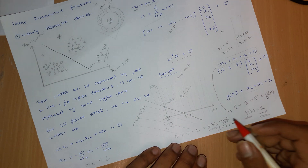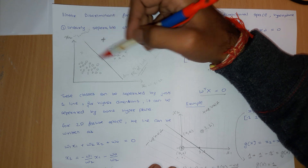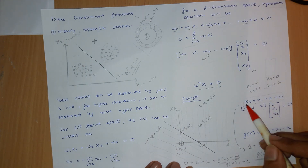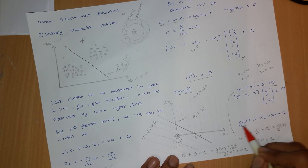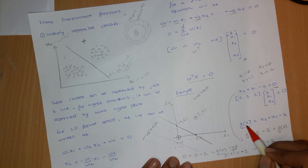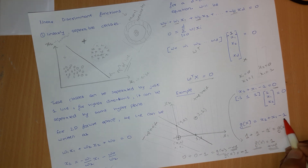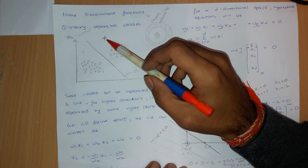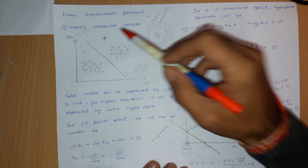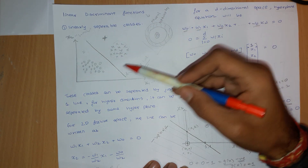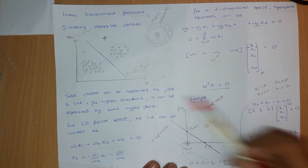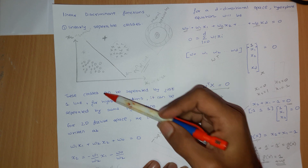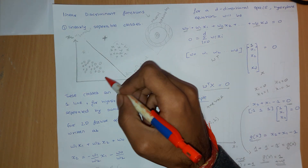Now you can see that if somebody gives you this line equation, instead of equating it to 0, equate it to g(x). So g(x) = x₂ + x₁ - 1. If a point is on one side the value will be positive — that is the positive half of the line — and if a sample is on the other half, the value of g(x) will be negative — that is the negative half of the line.